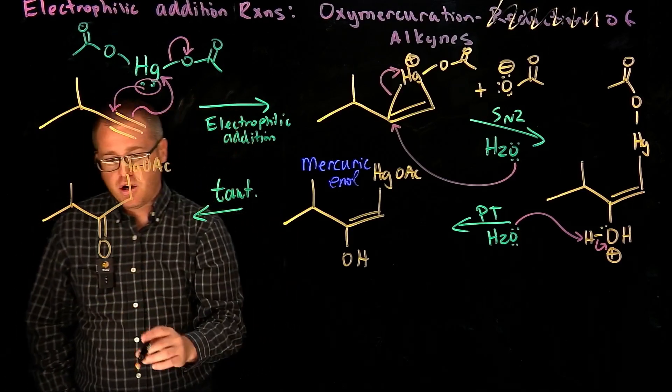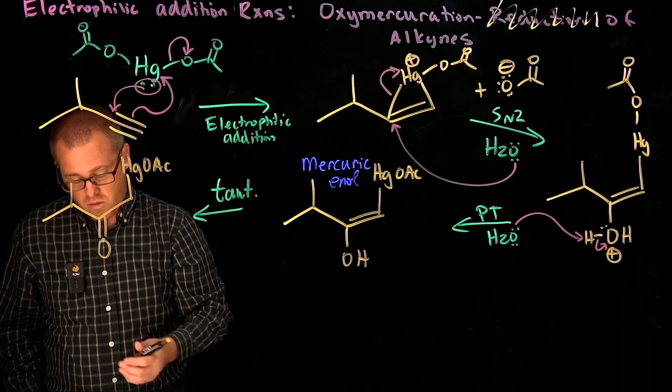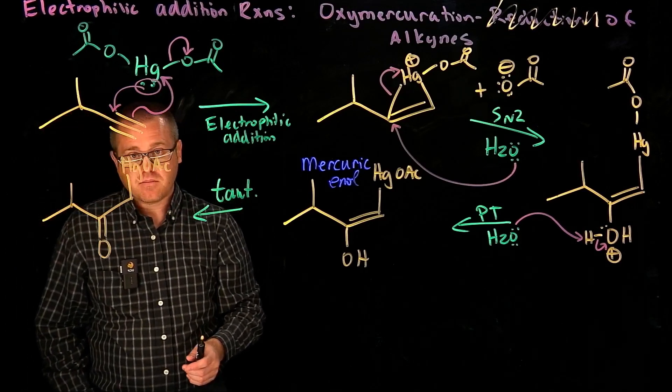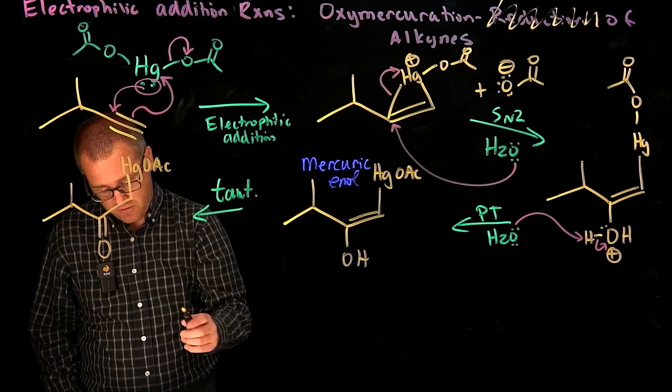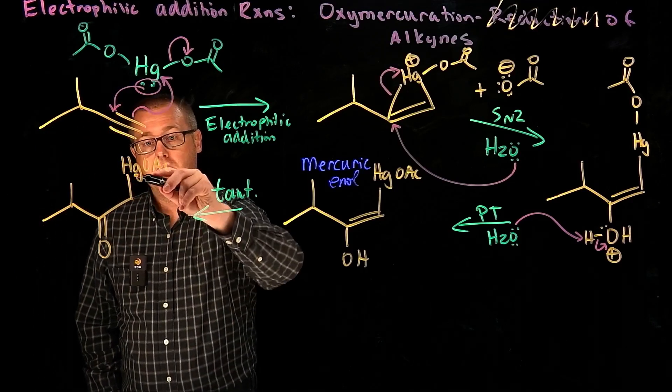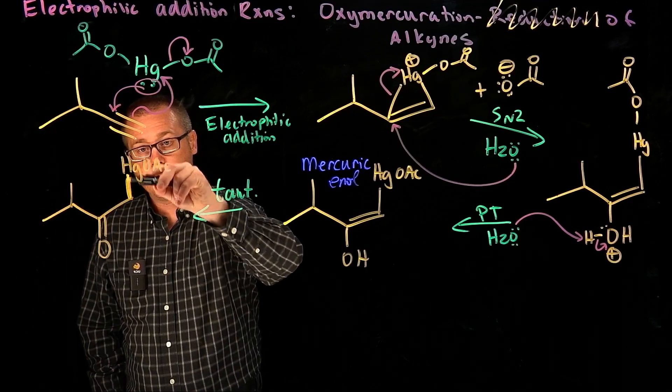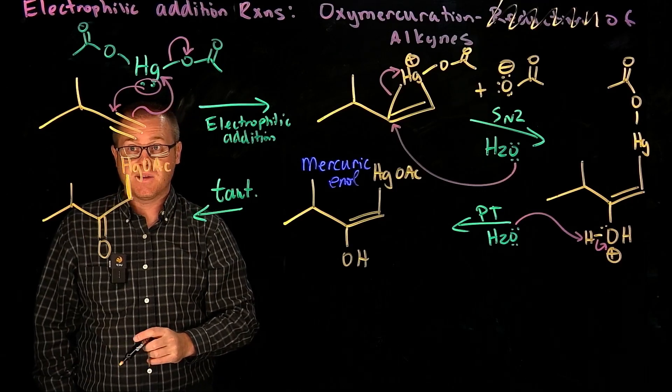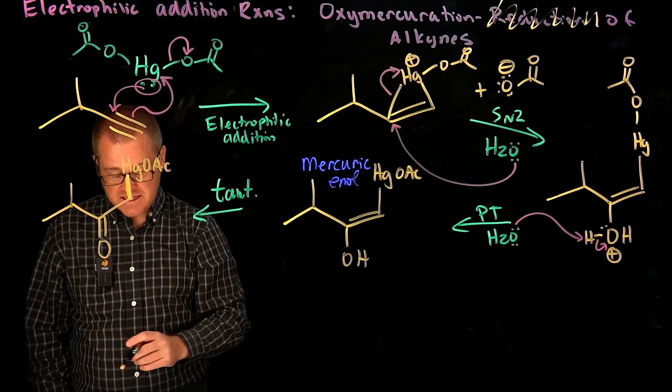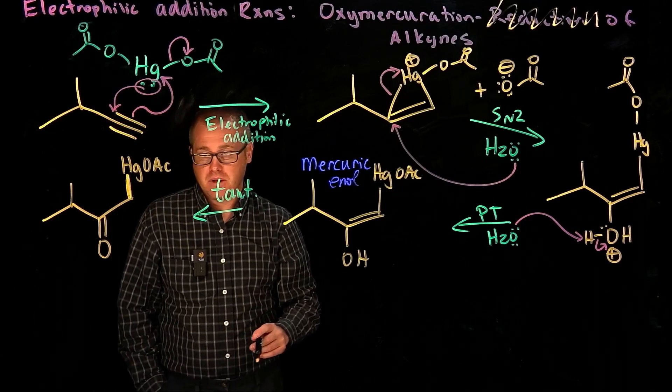Now in the keto form, that's where what's going to happen is we can hydrolyze this carbon-mercury bond with some acid, and we have acetic acid present.